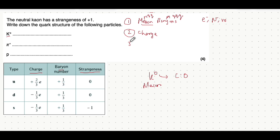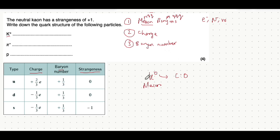Question number three: what's the baryon number? Only baryons have a baryon number of one, and antibaryons have a baryon number of minus one. That means anything that's not a baryon or antibaryon has a baryon number of zero. In this case, it's a meson, so it has a baryon number of zero.